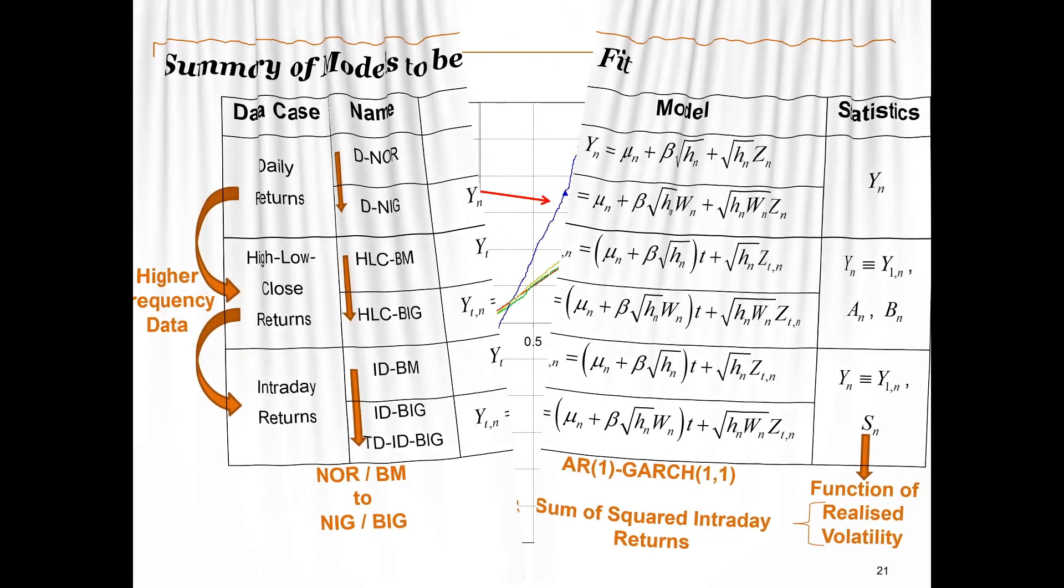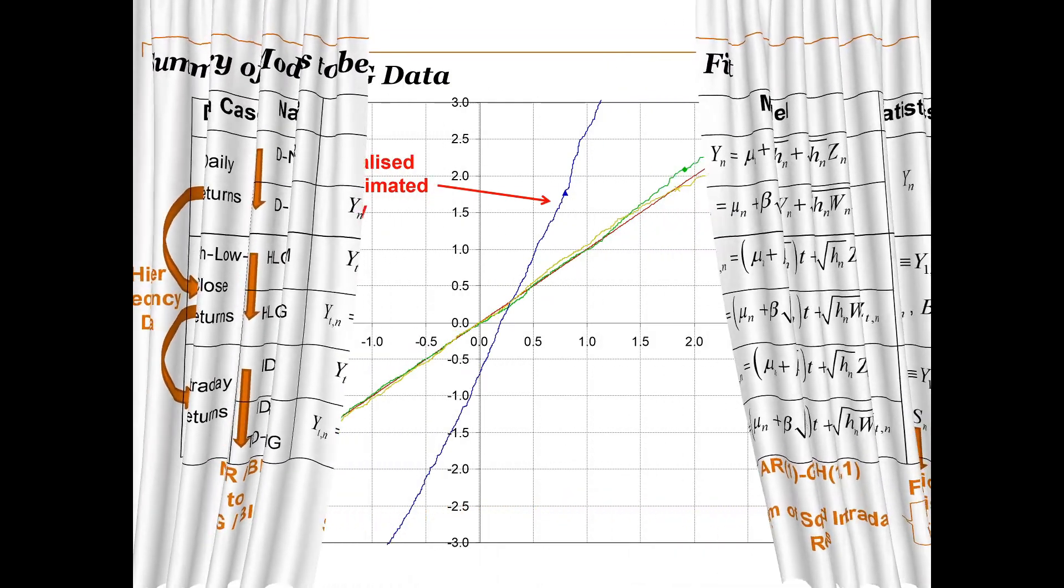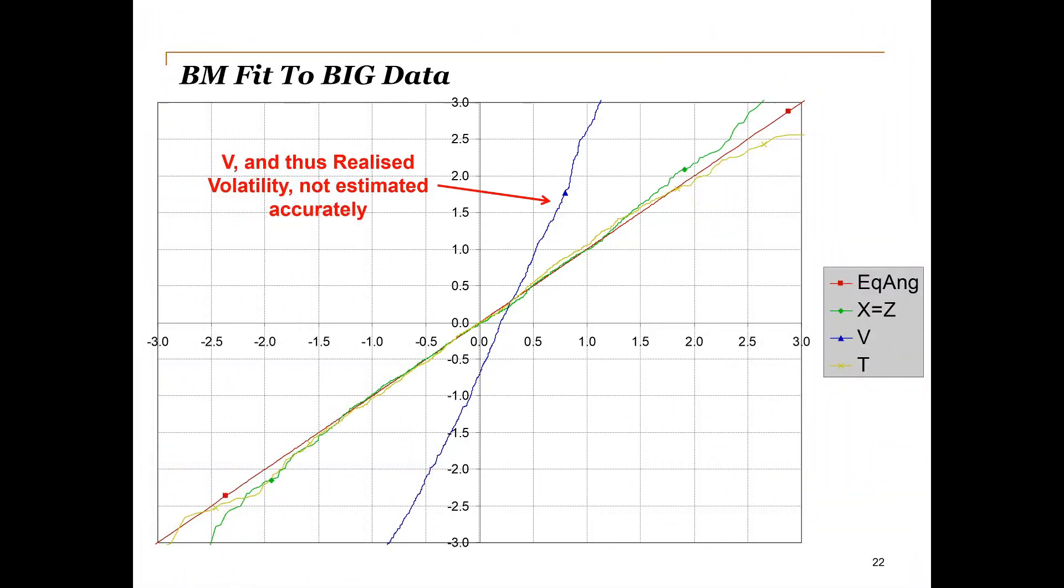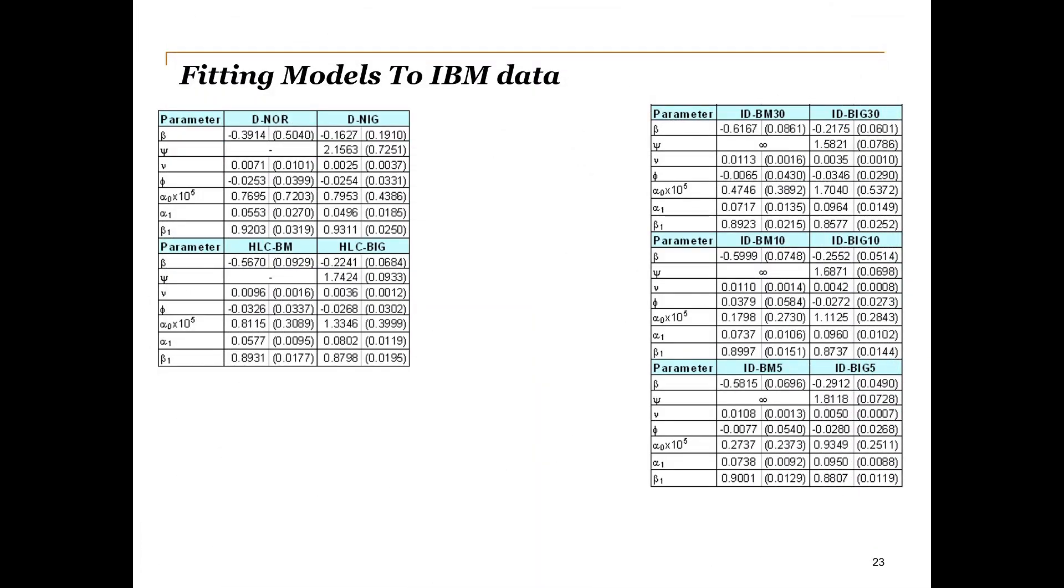And in the end, the models fit the corresponding generated data well. Also, the normal distributed based models did not fit the Brownian inverse Gaussian process data that well, as can be seen in this example, where the Brownian motion model does not estimate the realized volatility accurately. But the more interesting results and the real tests are the fits to real world IBM data.